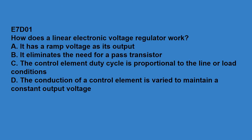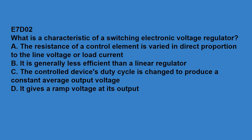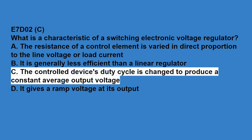E7D covers power supplies and voltage regulators, solar array charge controllers. E7D01, how does a linear electronic voltage regulator work? The conduction of a control element is varied to maintain a constant output voltage. E7D02, what is a characteristic of a switching electronic voltage regulator? The controlled device's duty cycle is changed to produce a constant average voltage output.